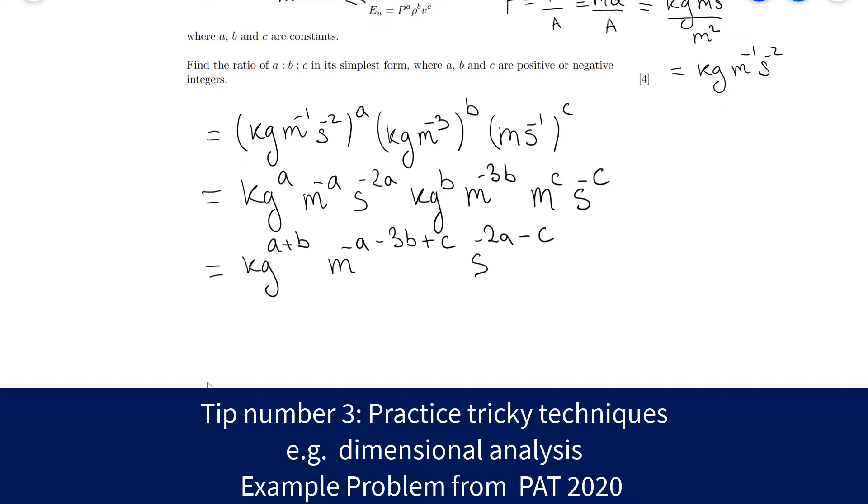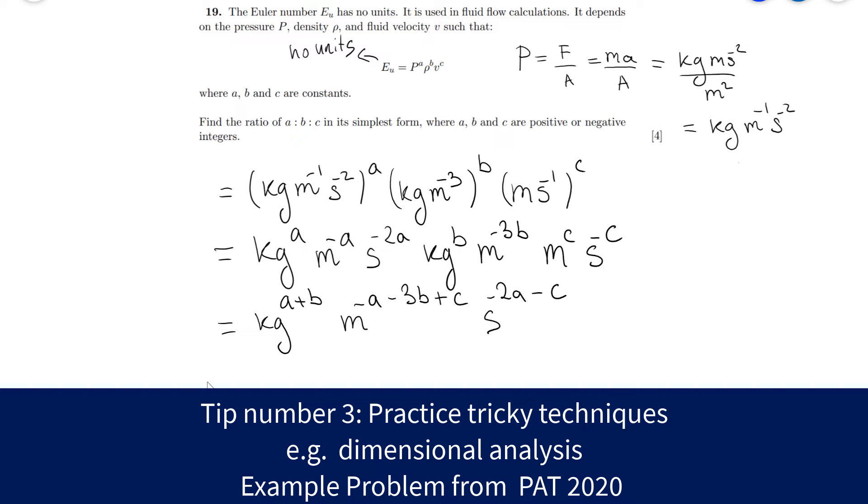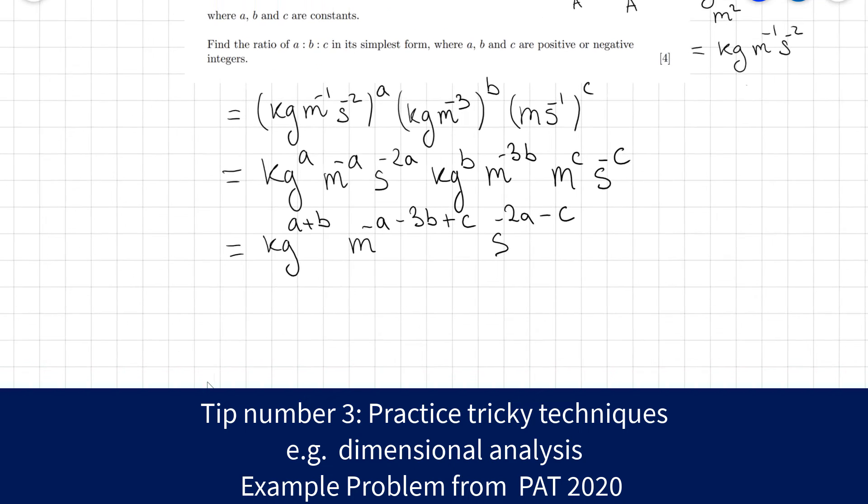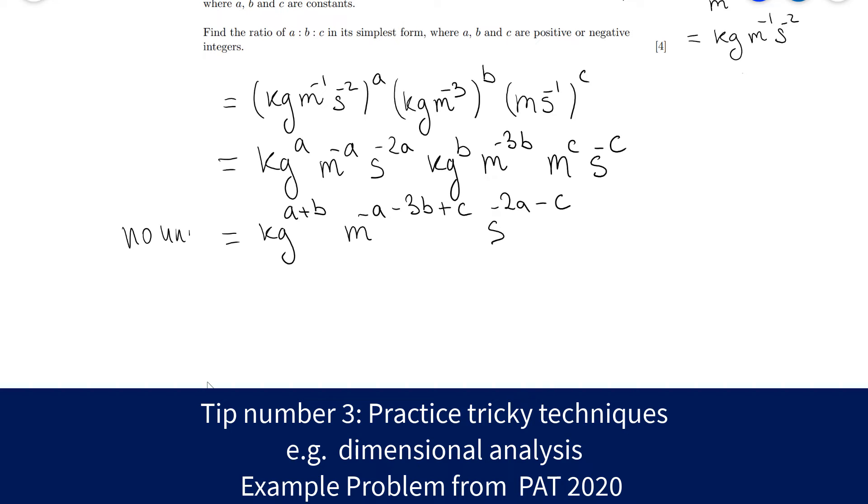Now here's the critical bit. Because the units on the left are non-existent, because we know that the Euler number has no units and this is written over here, what we can say is, once again on the left we have no units, that the combined power of each of those quantities will have to be equal to 0. Because anything raised to the power of 0 will be equal to 1. Then we can make a system of equations. So for instance, let's look at the simplest one. So A plus B will have to be equal to 0. So we can write this down. A plus B will be equal to 0. And we also know that minus 2A minus C will also be equal to 0. We can also say that minus A minus 3B plus C will be equal to 0. However, I have a feeling that we'll be able to get the ratio between A, B and C just from those two equations.